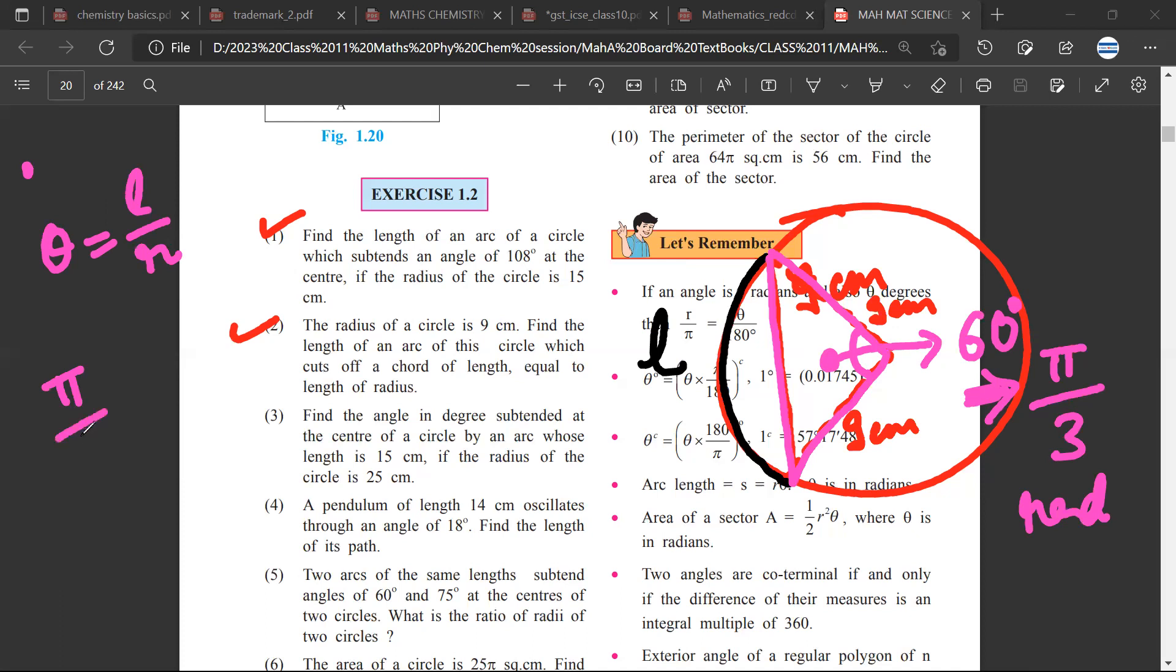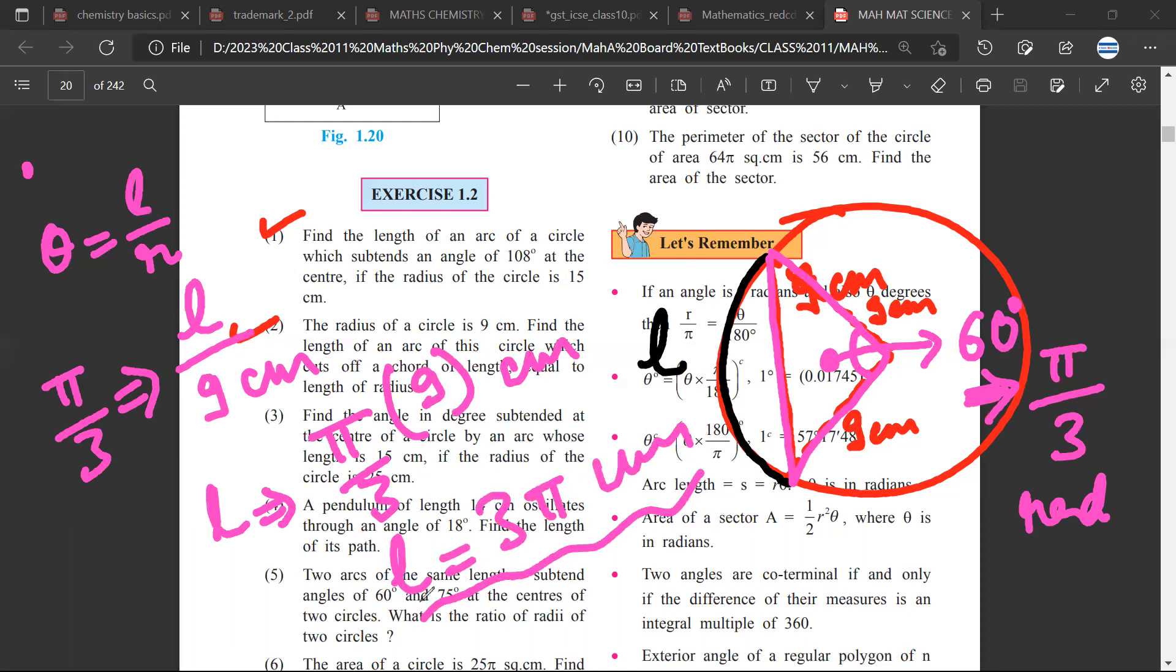So π/3 radians equals the arc length divided by the radius, which is 9 centimeters. The arc length would be π/3 times 9 centimeters, which equals 3π centimeters.